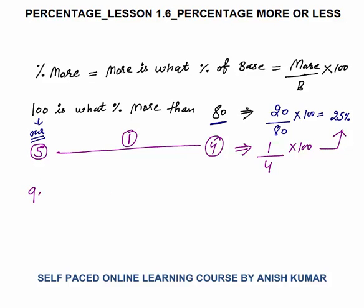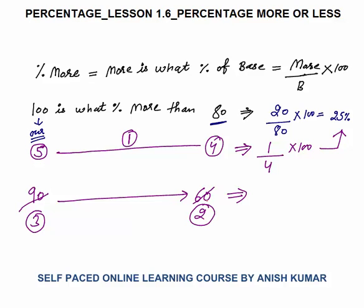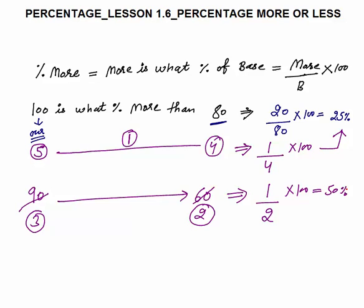For example, 90 is what percent more than 60. Rather than calculating the exact value, I can take the ratio: 3 is to 90 and 2 is to 60, so the ratio is 3 to 2. I can simply calculate 3 is what percentage more than 2. Percentage more is more — 3 is 1 more than 2 upon base 2 into 100, which gives 50%.